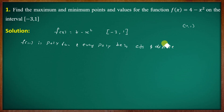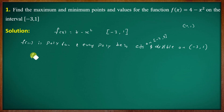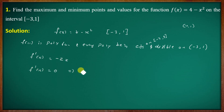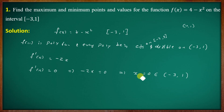So every polynomial function is continuous and differentiable. Continuous on the closed interval [-3, 1] and differentiable on the open interval (-3, 1). Now find the critical points. The derivative f'(x) equals -2x. Set f'(x) equal to 0: -2x equals 0, so x equals 0. The point x = 0 is in the interval [-3, 1].